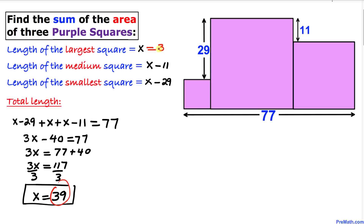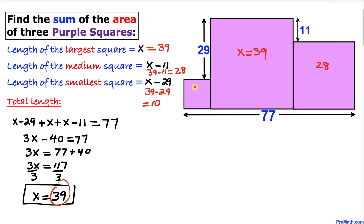The large square has side length x equal to 39. For the medium square, the side length is x minus 11, so 39 minus 11 equals 28. And the small square has side length x minus 29, so 39 minus 29 equals 10.